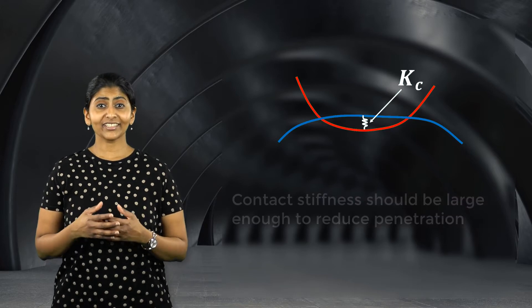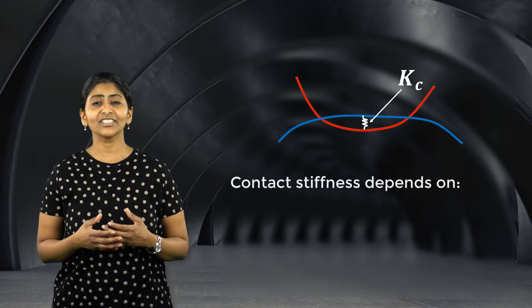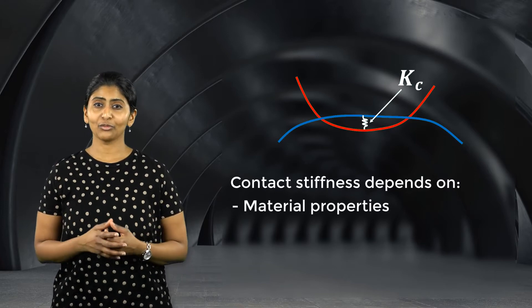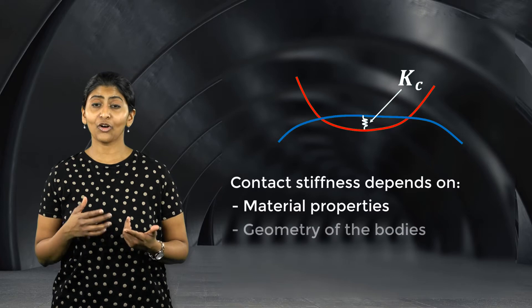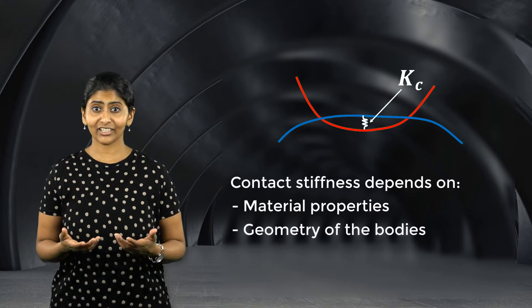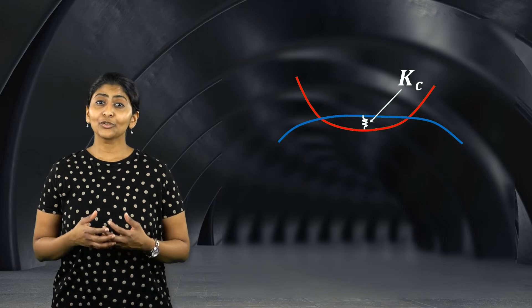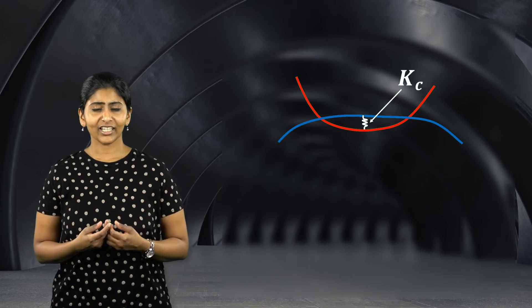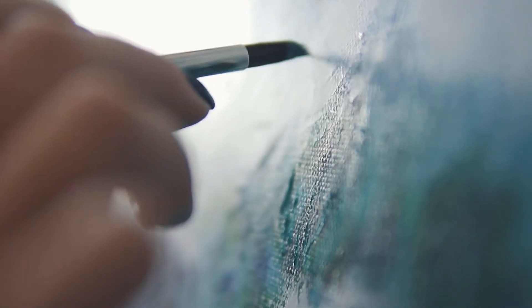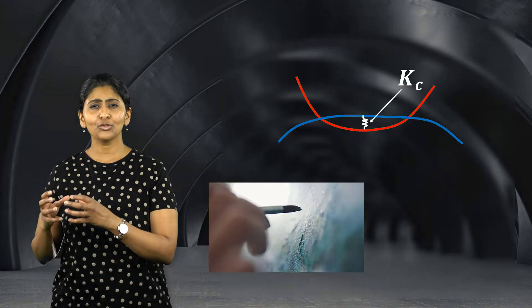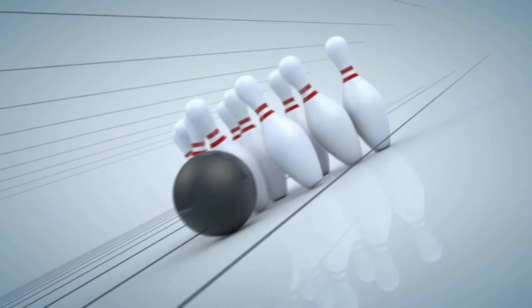The contact stiffness depends on several factors, such as the material properties of both the bodies, the geometry of the bodies, their kinematics, etc. For example, if the two bodies coming in contact are very soft, then the contact stiffness will be smaller as compared to contact stiffness between two very stiff, almost rigid bodies.